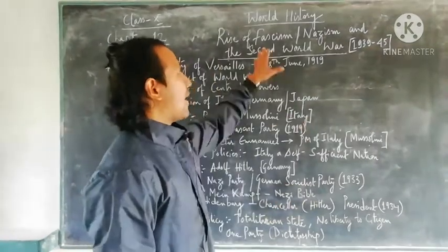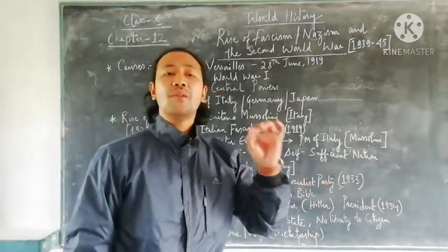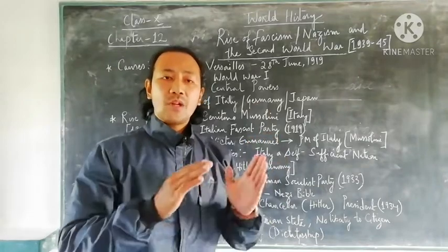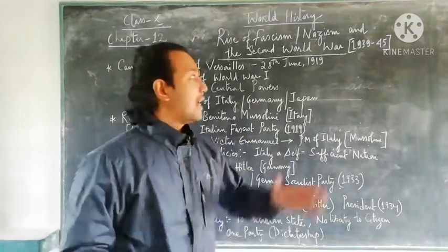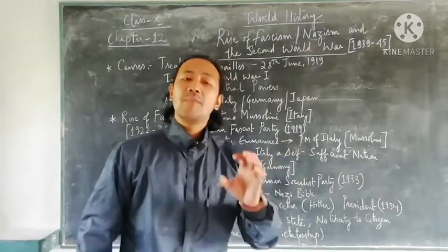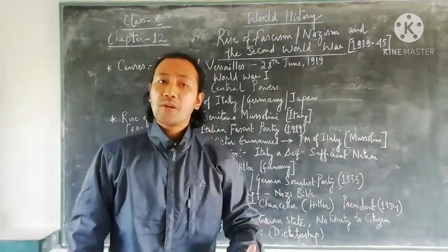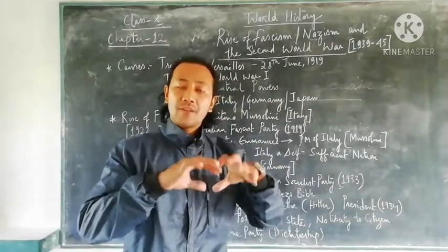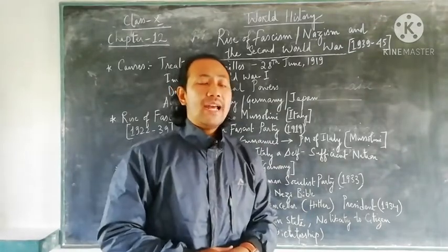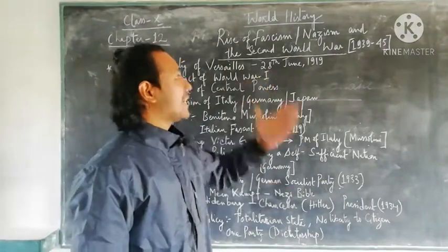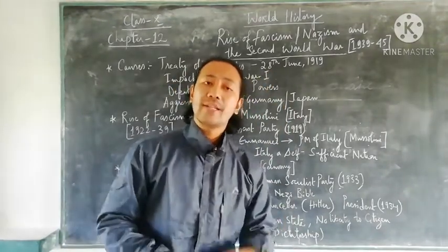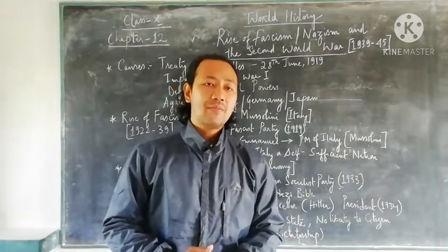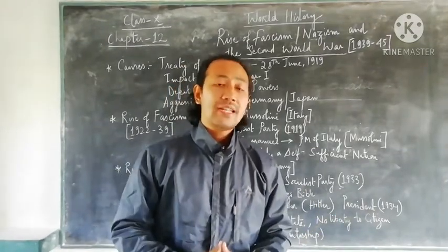If we talk first of all regarding fascism, fascism was one of the main political powers that existed in Italy during the Second World War. Nazism was a political party — a propaganda — which existed in Germany. Both countries were under the European nation. The Second World War started from 1939, especially on the 1st of September, after Germany invaded a small European country known as Poland.